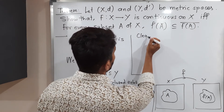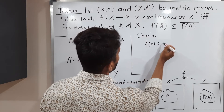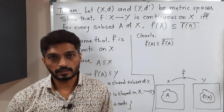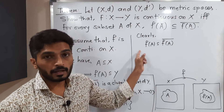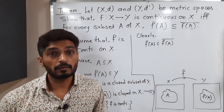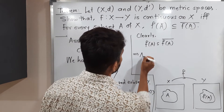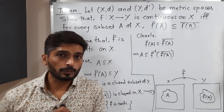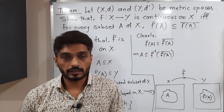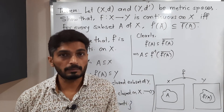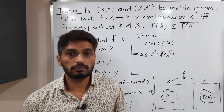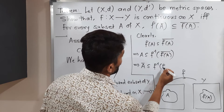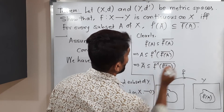Clearly, f(A) ⊆ f(A̅), since any set is a subset of its closure. Now, shifting f to the other side gives f⁻¹, so A ⊆ f⁻¹(f(A̅)). Taking closure of both sides and using the result that if A ⊆ B then Ā ⊆ B̄, we get Ā ⊆ closure of f⁻¹(f(A̅)).